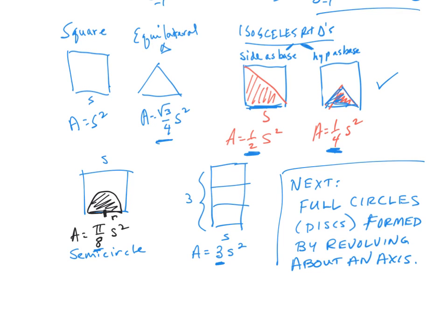Next up, we want to look at full circles — disks formed by revolving about an axis. They don't follow necessarily these cross-sectional patterns, but we do use the great summing machine to add up the area of the circle. The area of a circle is pi r squared — that's what we're going to be working off of.